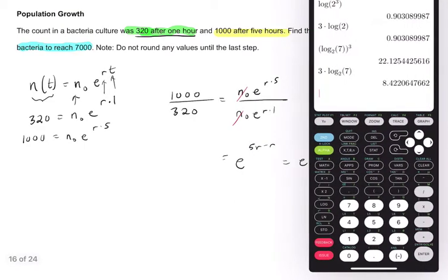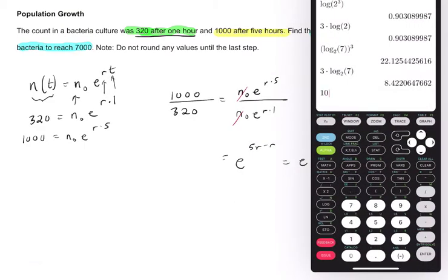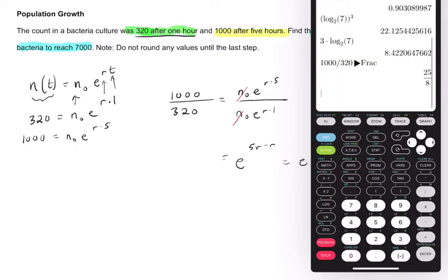And on the calculator, remember, you can reduce fractions quickly. Here, 1000 divided by 320, math, fraction, boom, 25 eighths. I don't need to do that—it won't impact my calculations, it's just a little bit neater to write. So this is 25 over 8.